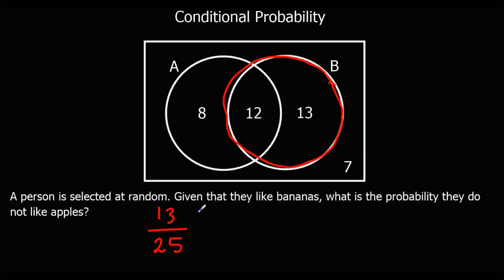So whatever's given, if it says given that, then that becomes what the question's now out of. So that's what we divide by. We divide by what's given that, and then we look at just in that circle, in this case, how we don't like apples.